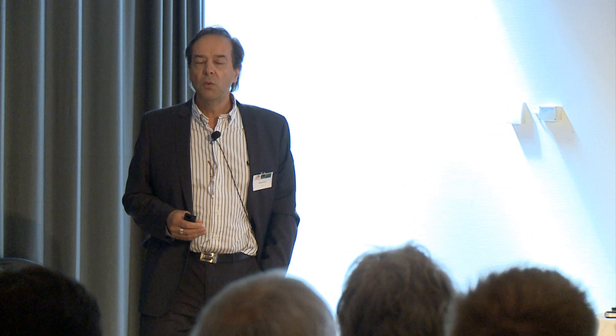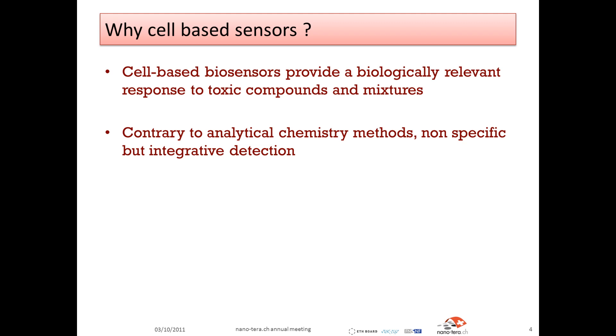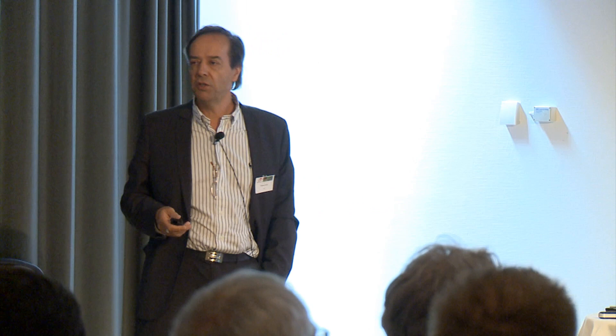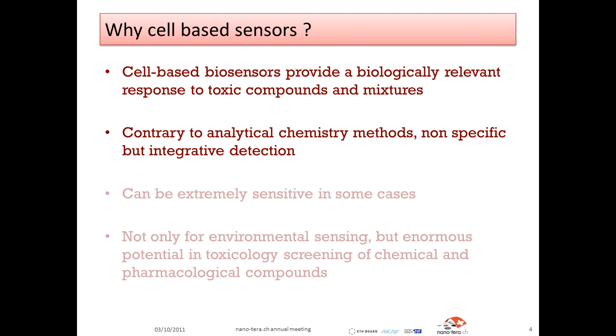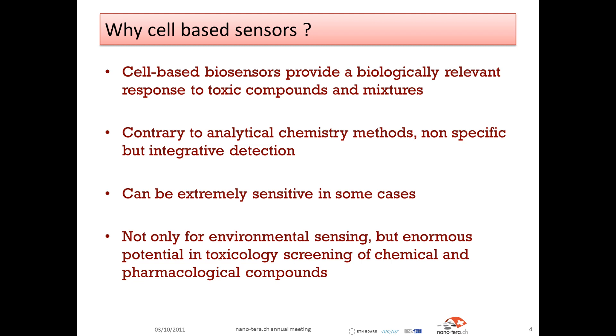Why do we want to make cell-based sensors? The main advantage of cell-based biosensors is that they provide, in principle, biologically relevant information. If you screen for pollutants by analytical chemistry, you need to know a priori what your compound is — you have to have it listed. That advantage may also become a disadvantage: you're not very specific. But you screen for toxicology and hope it's relevant for human toxicology. They can be extremely sensitive — with bacterial cells, for instance, they can detect pollutants at toxic levels smaller than what you can get with very expensive analytical instruments.